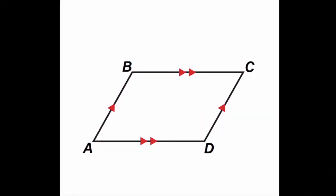What two properties do we already know about parallelograms, other than the fact that their opposite sides are parallel? If you recall from our previous video, we know that the opposite sides are congruent to each other — meaning AB is congruent to CD and BC is congruent to AD. We also know that the opposite angles are congruent to each other, meaning angle A is congruent to angle C and angle B is congruent to angle D. However, that's not all we know about parallelograms.